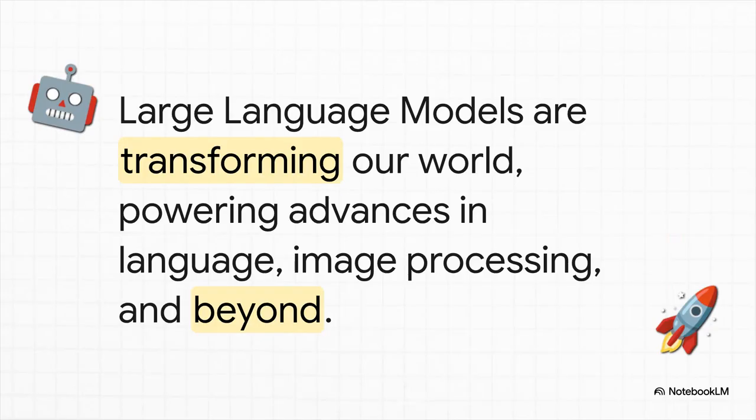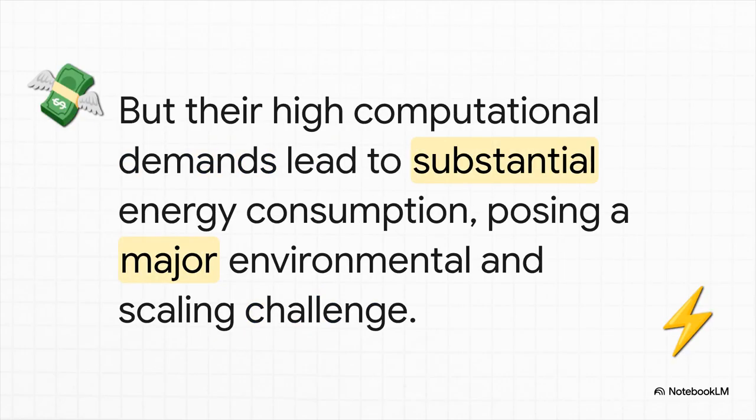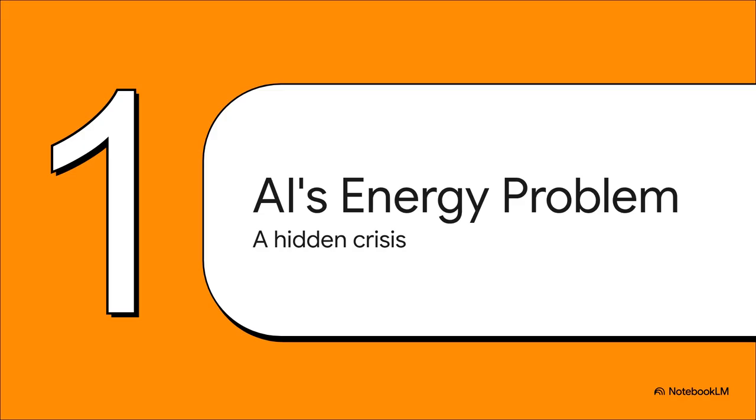We all know large language models are everywhere. They're completely changing the game in pretty much every industry you can think of. They're without a doubt one of the most powerful technologies we have today. But there's a massive catch, a really big one. To get these incredible models to work, you need a mind-boggling amount of power. And that means they have an absolutely ravenous appetite for energy. And that gets us to the core problem we need to tackle today. This isn't just a small issue. It's a hidden crisis that could seriously slow down the future of AI.